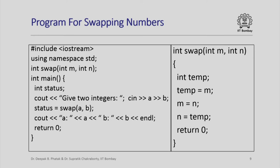Let us look at how a swap program might look using call by value. The main function reads two integers and calls the swap function, passing their values. The swap function uses a temporary variable to swap the values of its two arguments m and n — storing the value of one in temp, copying the other to the first, then copying temp to the second. So the values of m and n are swapped, and swap returns 0 since we declared it to return int.